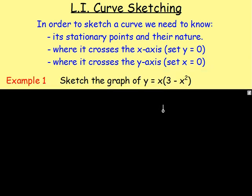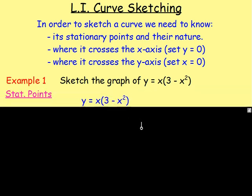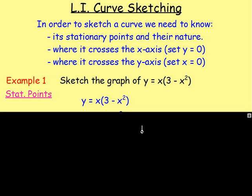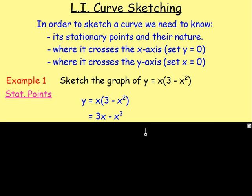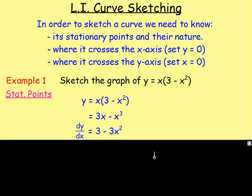Let's work through a couple of examples. Example number one: sketch the graph of y equals x bracket (3 minus x squared). The first thing we need is the stationary points. To get them, remember you're best multiplying out the brackets first, giving 3x minus x cubed. From there we can differentiate: dy/dx equals 3 minus 3x squared.